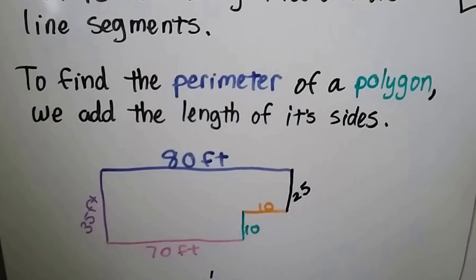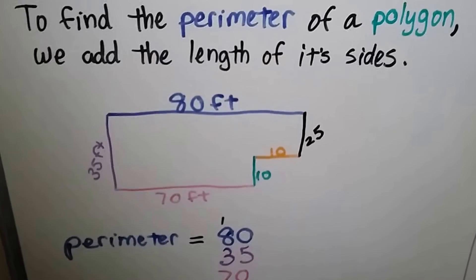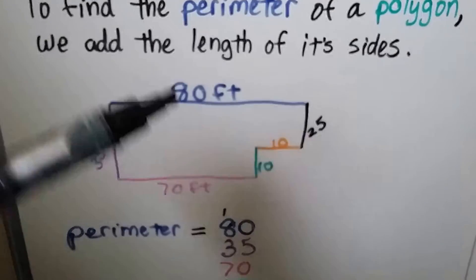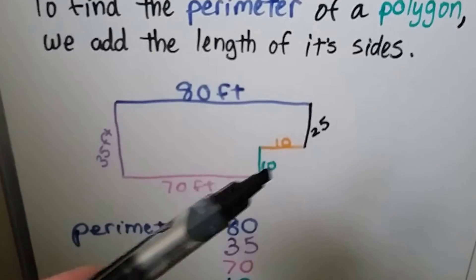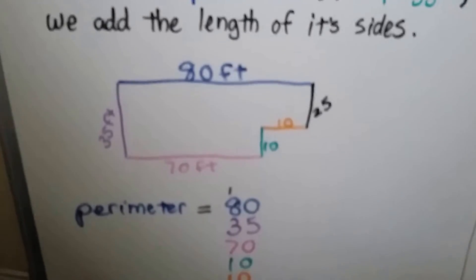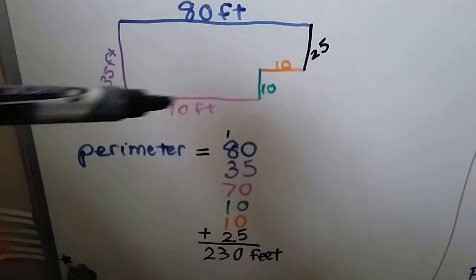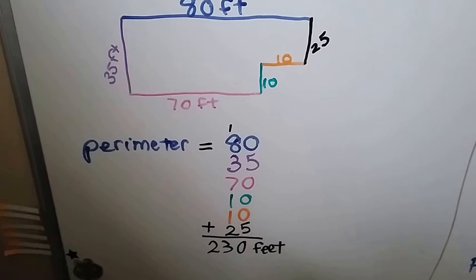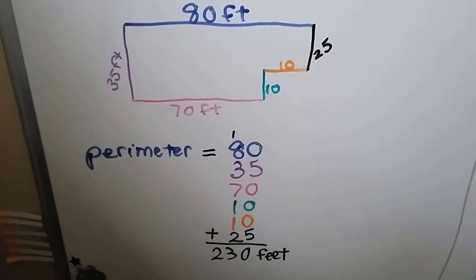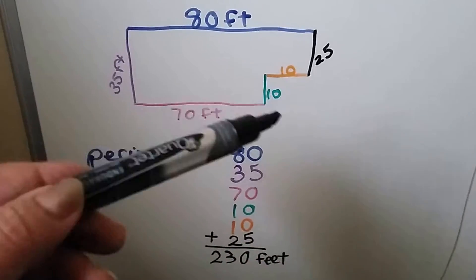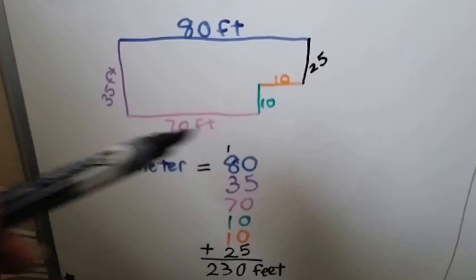To find the perimeter of a polygon we add the length of its sides. It's that easy. We have 80 feet, 25 feet, 10, 10, 70 and 35. We just add them all up. It's like the length of fence you would need. We get 230 feet. That's the perimeter. It's the measure of the outside edge. See? All these line segments.